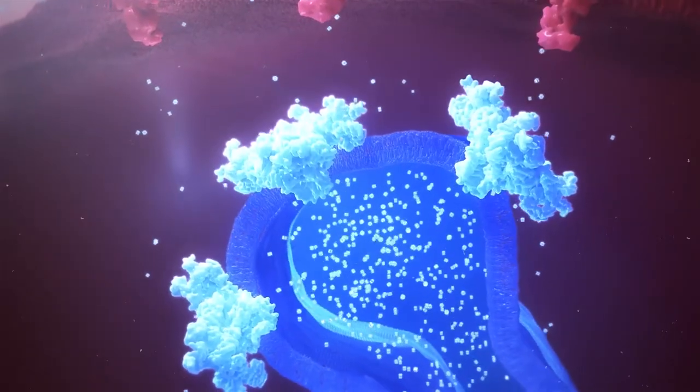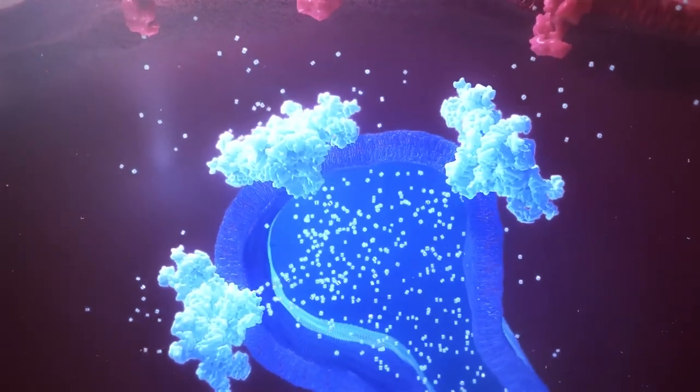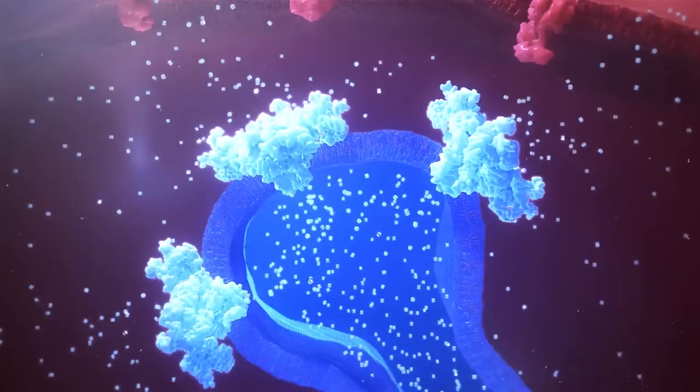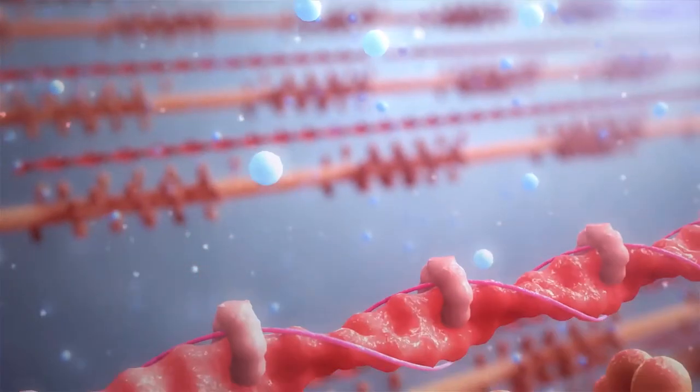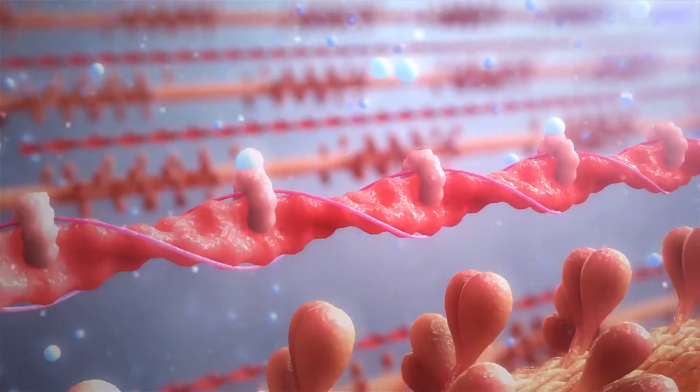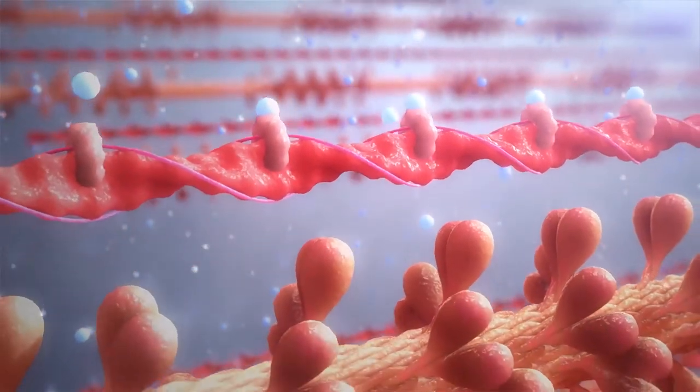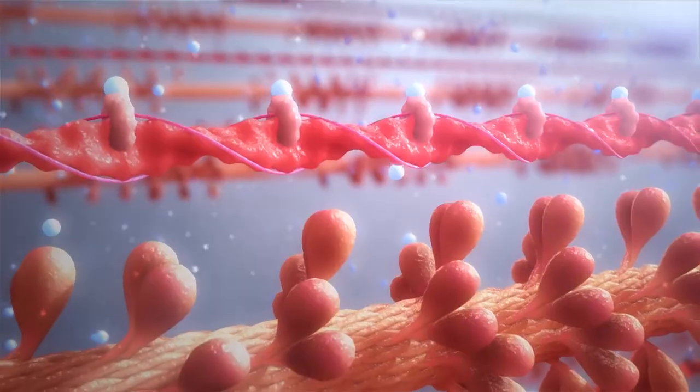Calcium ions flow rapidly into the cytosol in a process known as calcium-mediated calcium release. The cytosolic calcium then binds to troponin C, which leads to a series of conformational changes of troponin I and tropomyosin.